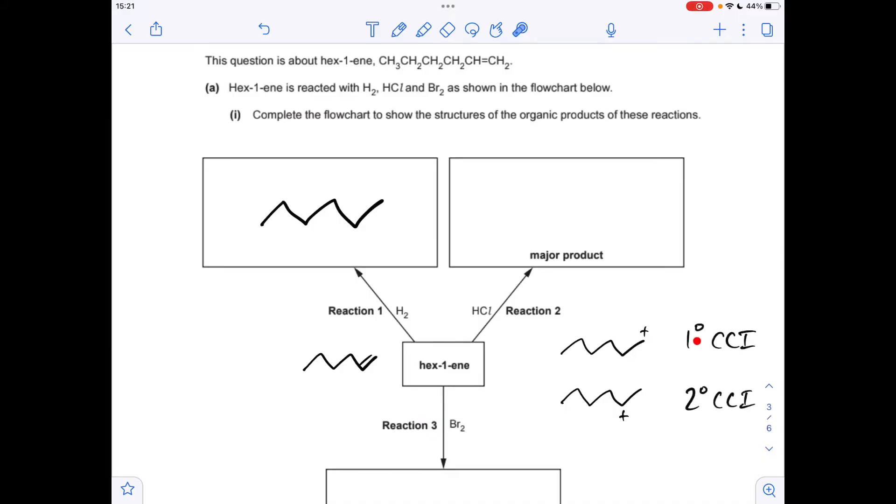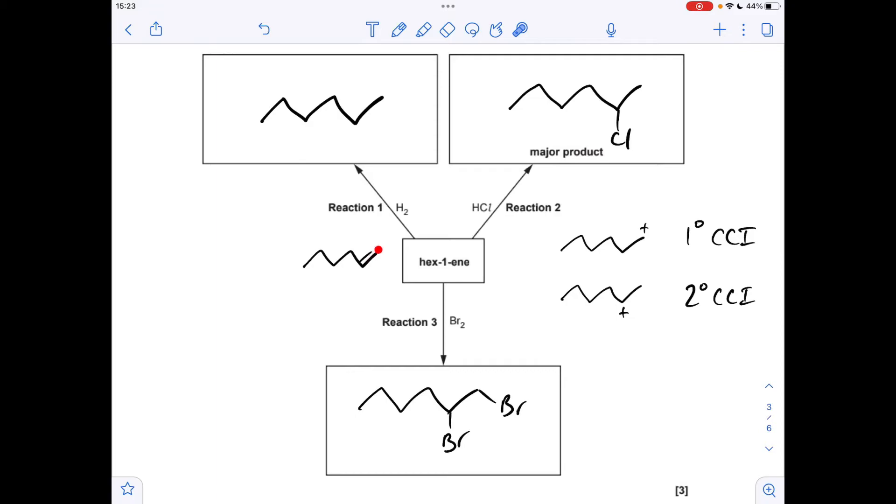This top one is a primary carbocation intermediate because the carbon with the positive charge is bonded to just one carbon directly, whereas this one's a secondary carbocation intermediate because the carbon with the positive charge is bonded to two carbons directly. This one's more stable which means that's going to be the major product.